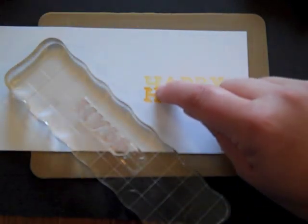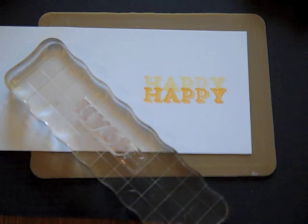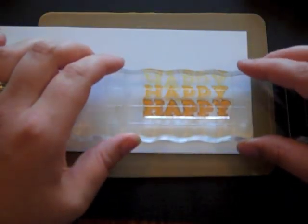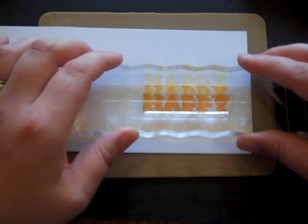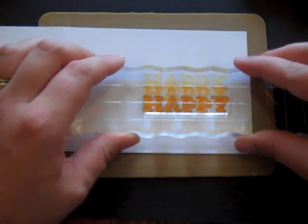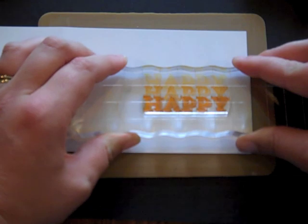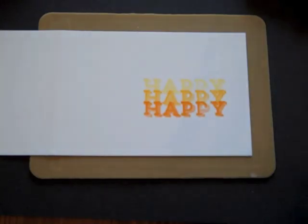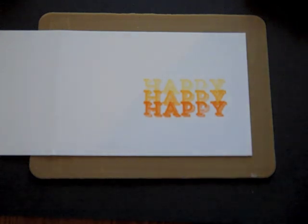And you can see right there where they're overlapping. I'm going to do the same thing again only this time with orange zest. Again, overlapping those serifs helps it to come out perfect every time.